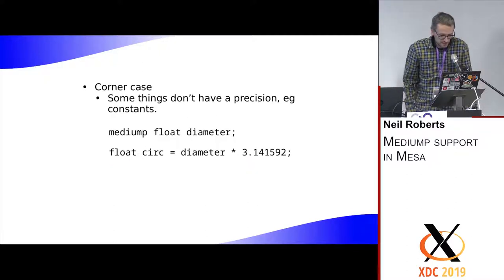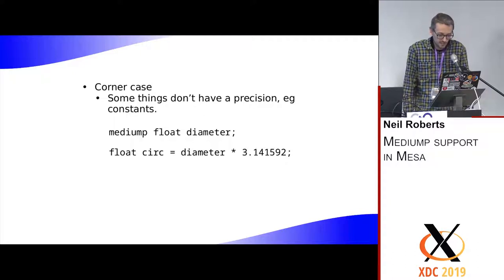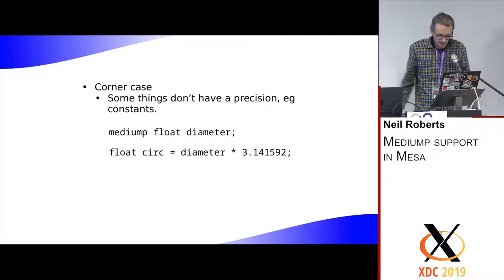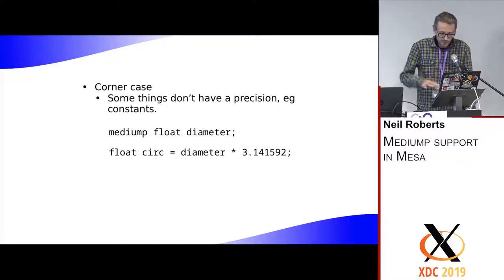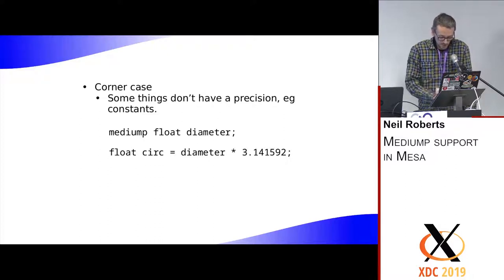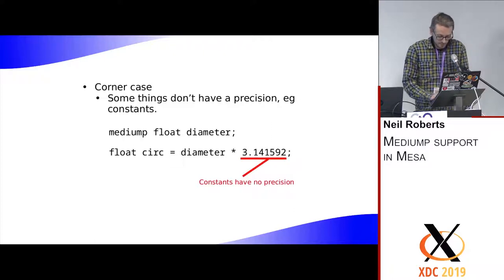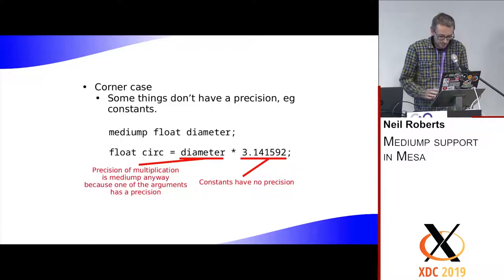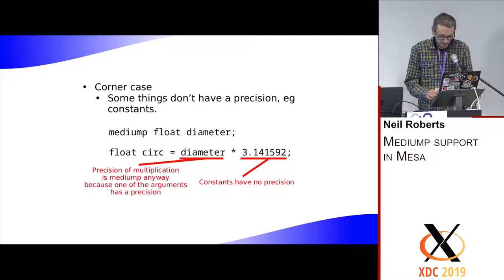There are some corner cases because not everything has a precision. For example, literal float constants are not declared with a precision — their precision is just none. But as long as one operand to an operation has a precision, that can be used to determine the precision for the operation. So in this example, the constant pi doesn't have a precision, but the operation can still be done in mediump because at least one operand does have a precision.